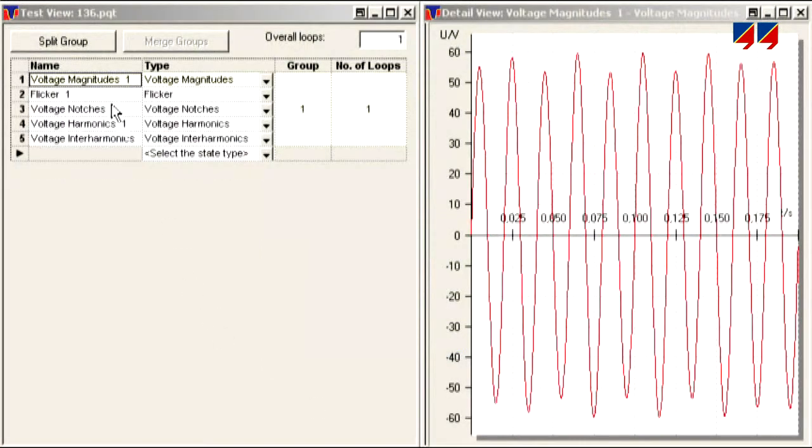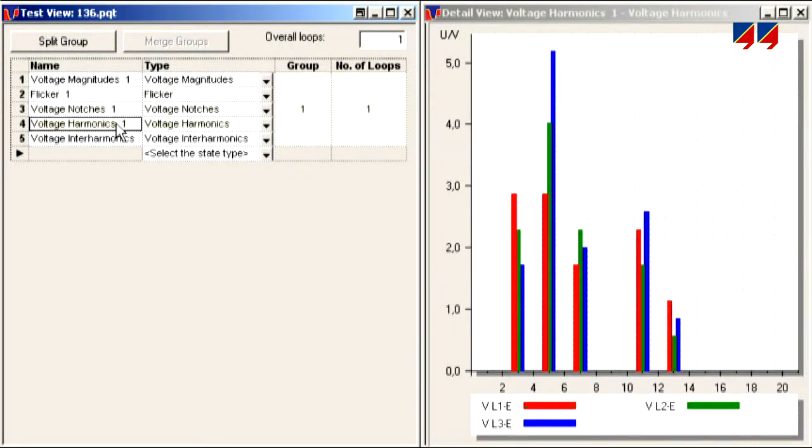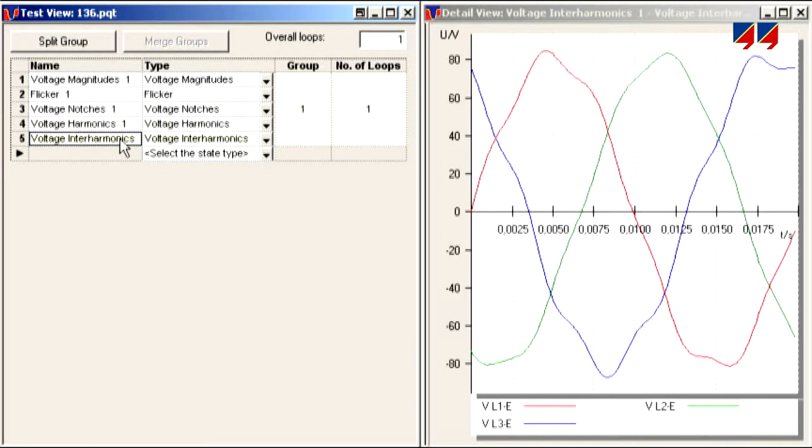The user can generate a test plan with a combination of all these power quality events, which is then automatically run by the CMC.